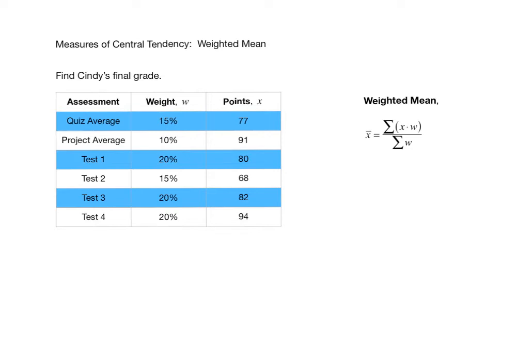We have one more type of mean that you should be able to compute. It's called a weighted mean. Suppose you had a set of data like this, but you didn't want to simply find the average. You want to weight them differently — for example, you want this 80 to be twice as valuable as this 91. This is called a weighted mean, and it's commonly seen in the computation of student grades.